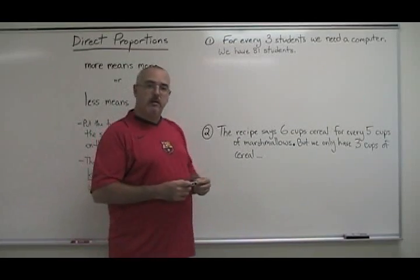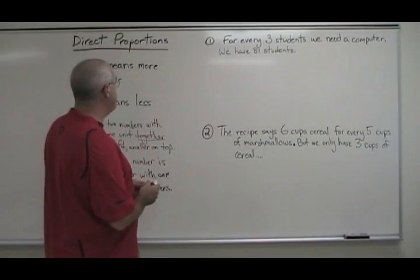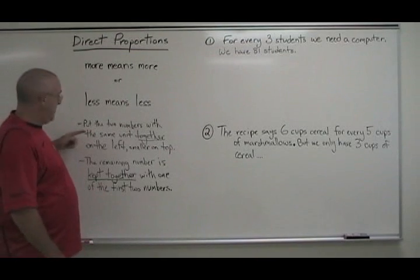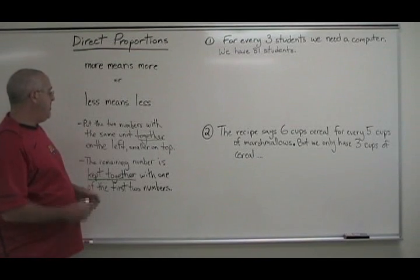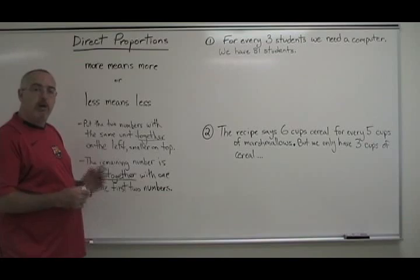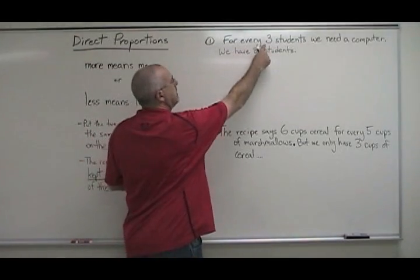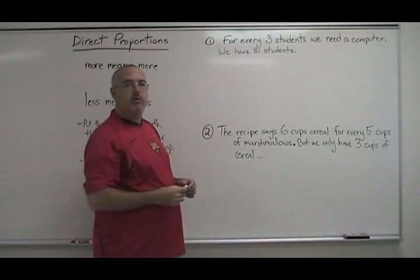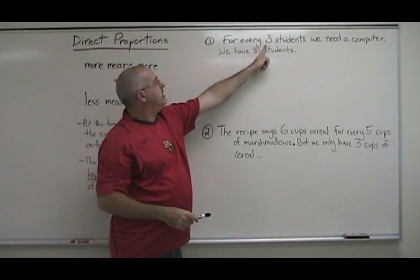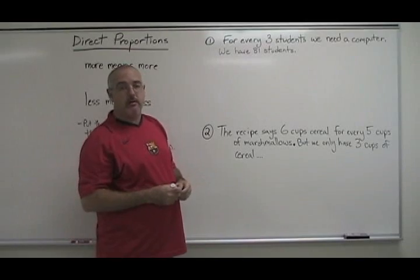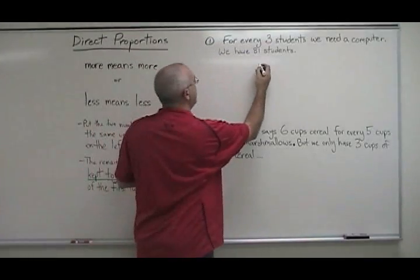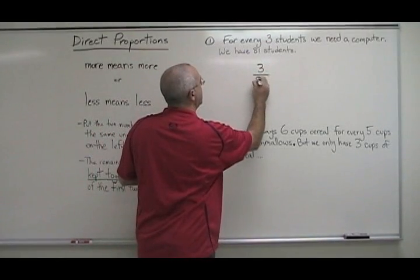How do you solve a direct proportion? Here's the first rule. Put the two numbers with the same unit together on the left, smaller on top. What that means is, we find the two numbers that are given in the problem that have the same unit. In this problem that is the three students and the 81 students. The unit is students. We put those two numbers together with the smaller one on top.